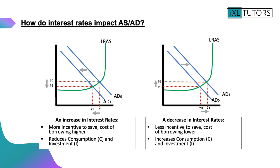On the right you have a diagram that shows what happens when there is a decrease in interest rates. A decrease in interest rates gives less of an incentive to save and the cost of borrowing is lower. That causes consumption and investment to increase and therefore aggregate demand shifts from AD0 to AD1. If you pause here you can jot down those diagrams and then there's a further explanation on the next slide to copy down as well.